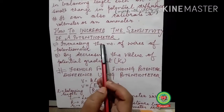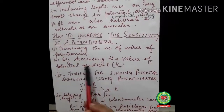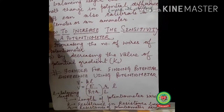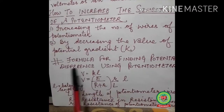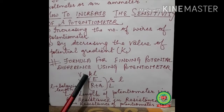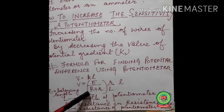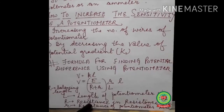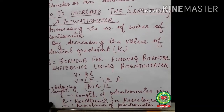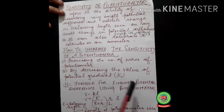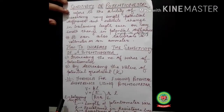We can increase the sensitivity of the potentiometer by increasing the number of wires, or by decreasing the value of K, the potential gradient. The formula for finding the potential difference using a potentiometer is V = K × L, where K = EMF of the battery (E) divided by resistance R plus small r — with R being the resistance in the resistance box, small r being the resistance of the potentiometer wire, and L being the balancing length. I hope you have understood the topic. Thank you, students.